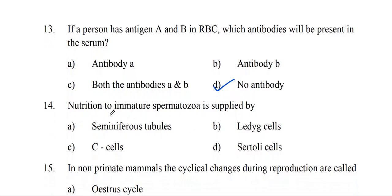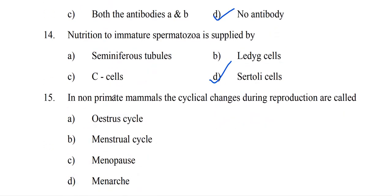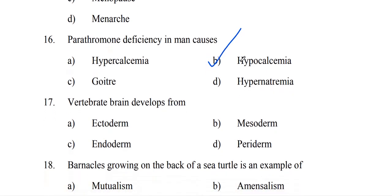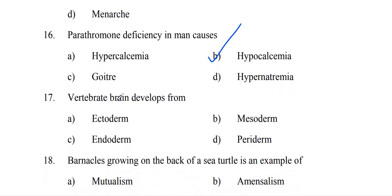Nutrition to immature spermatozoa is supplied by Sertoli cells. In non-primate mammals, the cyclic changes during reproduction are called the Oestrus Cycle. Parathormone deficiency in men causes hypocalcemia. The vertebrate brain develops from ectoderm.